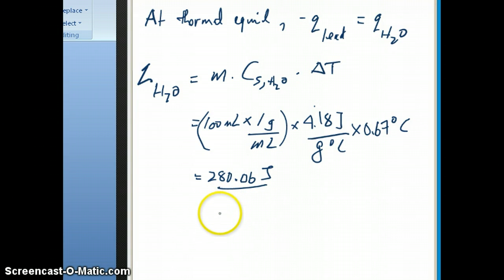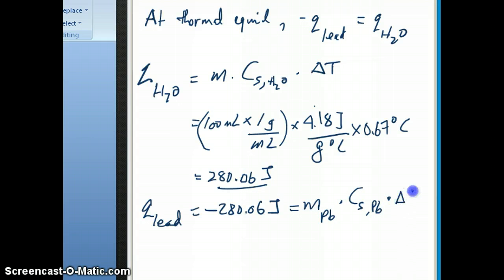Now, the metal is being placed into the water, the water is inside the coffee cup calorimeter initially. So this is the amount of heat absorbed by the water, the amount of heat released by the metal, therefore must be equal to this, but in the negative sense. So then, q of lead is just going to be equal to negative 280.06 joules. And that should be equal to mass of lead times its specific heat times delta T.